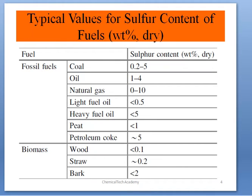Let's look at different materials that contain sulfur. Note that sulfur is sometimes written as SULFUR and sometimes as SULPHUR. Here are typical values for sulfur content of different fuels in terms of weight percent dry — meaning water content is excluded. Fuels are divided into fossil fuels (coal, oil, natural gas, light fuel oil, heavy fuel oil, petroleum coke) and biomass (wood, straw, bark). Coal has a very high sulfur content ranging from 0.2 to 5 percent.